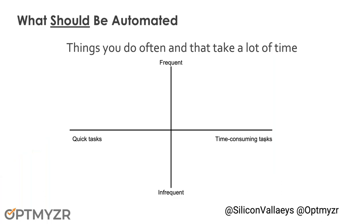Before I get into solutions and tools you can use to automate, I think it's interesting to talk about what things should we even try to automate. There are so many tasks that we do on a day-to-day or monthly basis to keep our accounts healthy. Let's draw a quick little graph. We have two axes: on the Y-axis, tasks we do frequently at the top or infrequently at the bottom. On the X-axis, on the right side, things that are time-consuming, and on the left, things that are pretty quick.